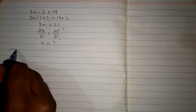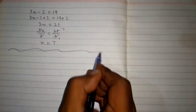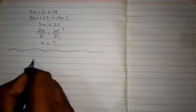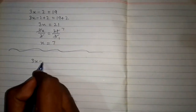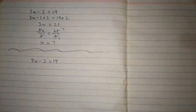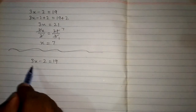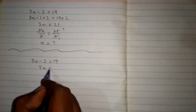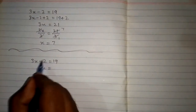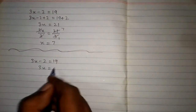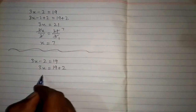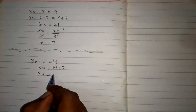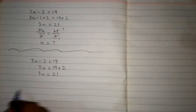We can also use another method to solve this equation. We have 3x minus 2 is equal to 19, and we can take this minus 2 on the other side of the equation, where it will become plus 2. So we have 3x is equal to 21.